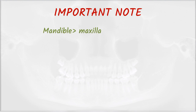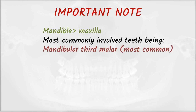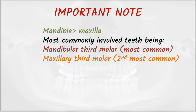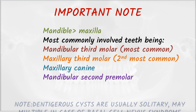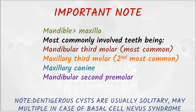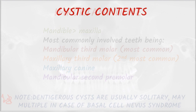An important note: dentigerous cysts are more common in the mandible compared to the maxilla. The most commonly involved teeth are, in order: mandibular third molar, maxillary third molar, maxillary canine, and mandibular second premolar. Also very important: dentigerous cysts are usually solitary but may be multiple in cases of basal cell nevus syndrome.